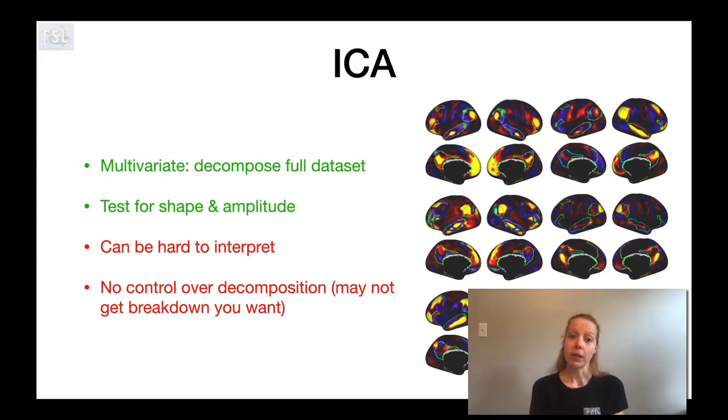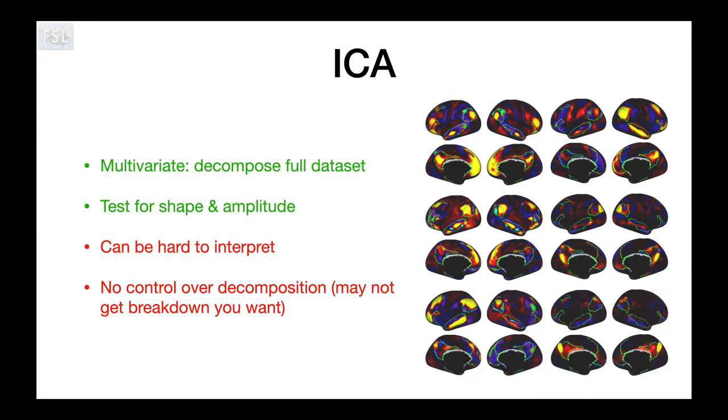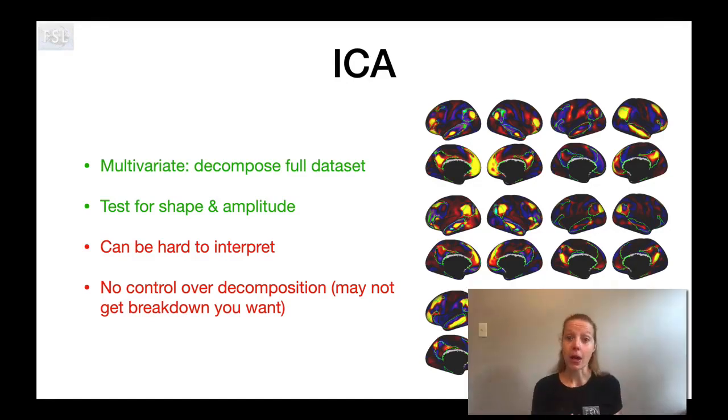The second method that I want to talk about is independent component analysis or ICA which is a data-driven method that tries to identify or summarize the data set as a whole into a number of different networks where each network is described by a spatial map as you can see here and an accompanying time course. This addresses some of the downsides of using seed-based correlation analysis because it's a multivariate approach that describes or summarizes the entire data set and so it really captures the complex organization into multiple different networks as opposed to seed-based correlation analysis. The other advantage is that if you combine for example a group ICA with dual regression analysis then you can test for differences between subjects or between groups in terms of both the shape of the networks but also the amplitude or the localized strength of the network.